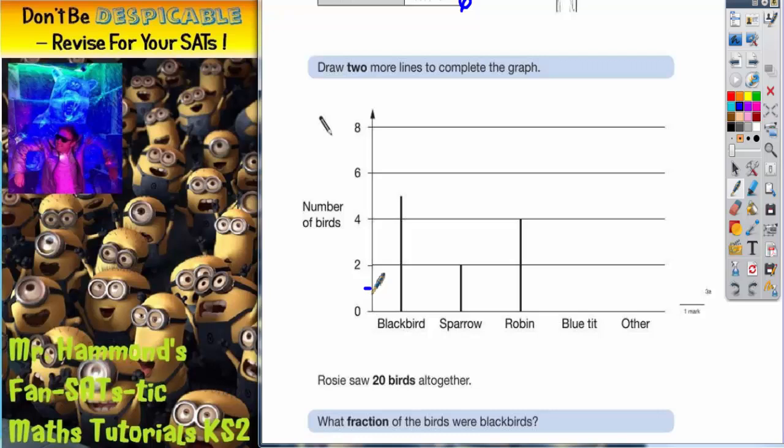So in between each gap it would go 1, 2, 3, then 4, 5, and 7. And we want blue tit to be 3. So 3 is going to be level with this point here. So we just need to draw a line in like that.